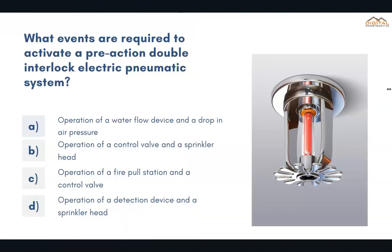What events are required to activate a pre-action double interlock electric pneumatic system? The correct answer is D: operation of a detection device and a sprinkler head.